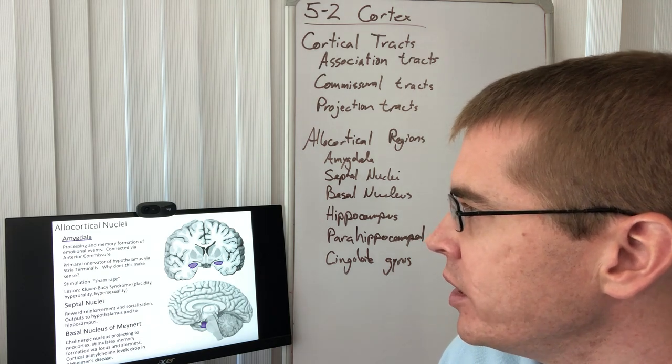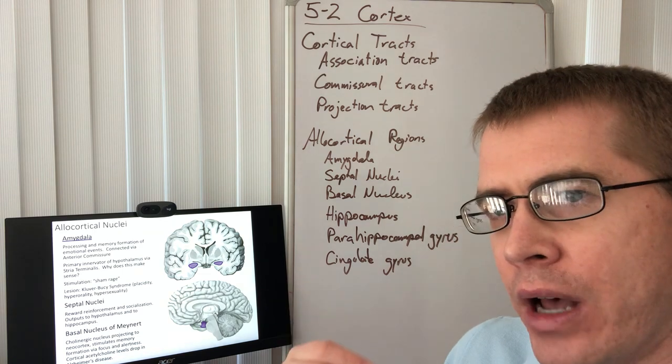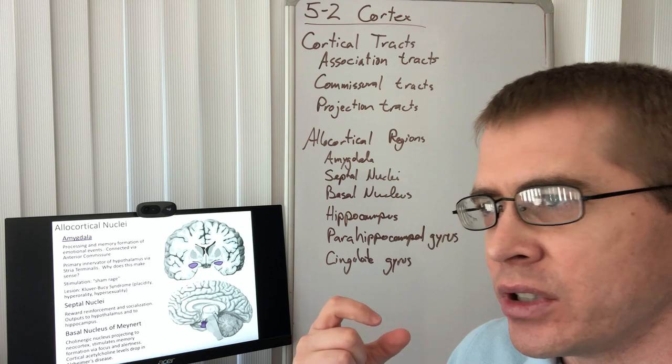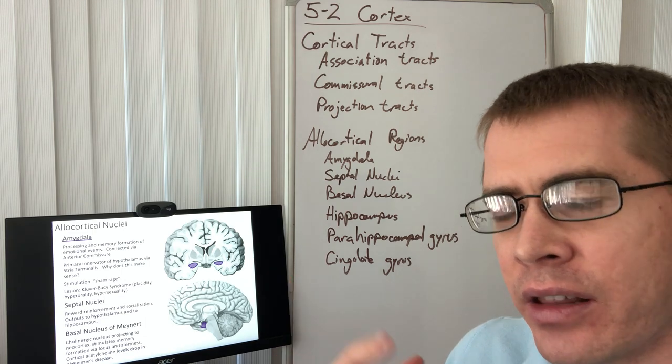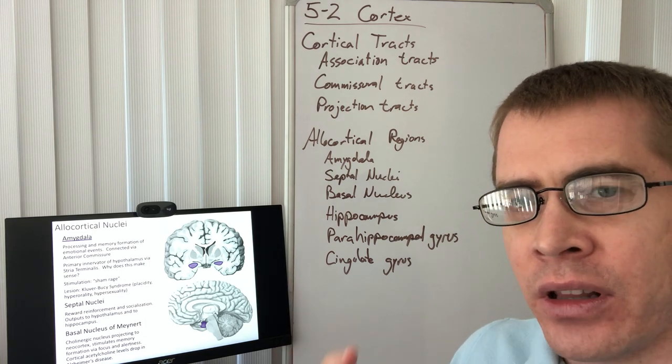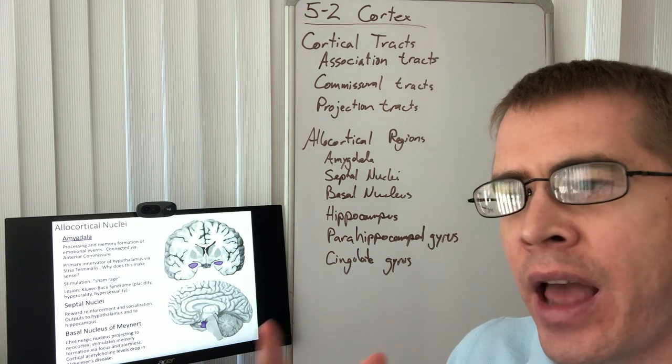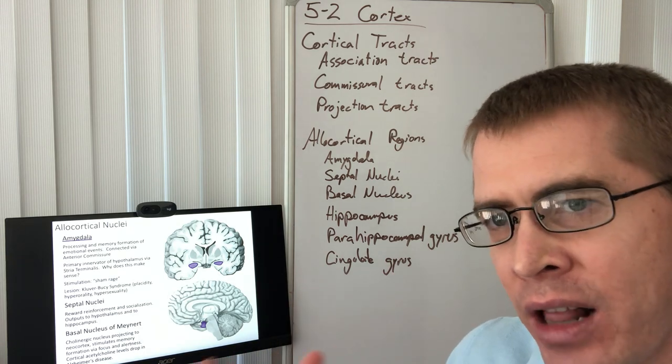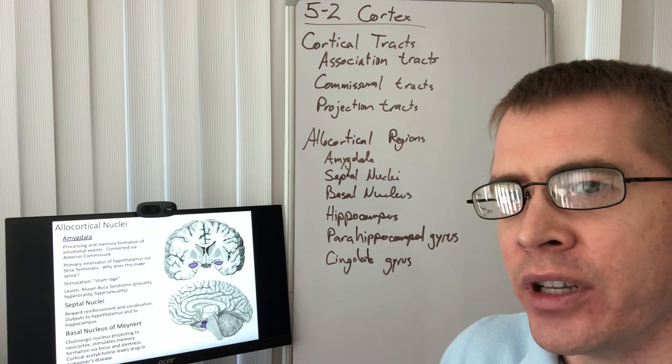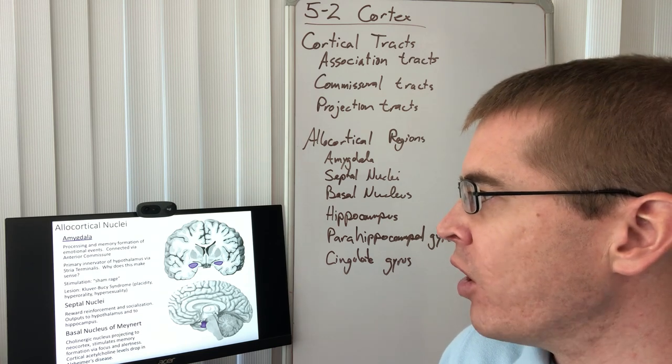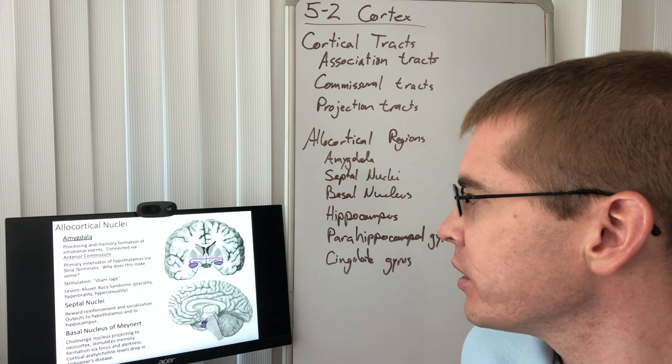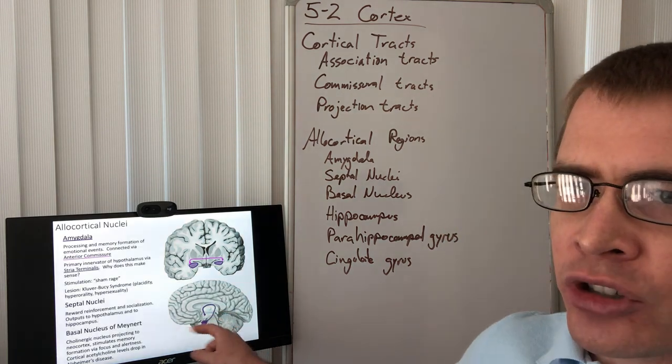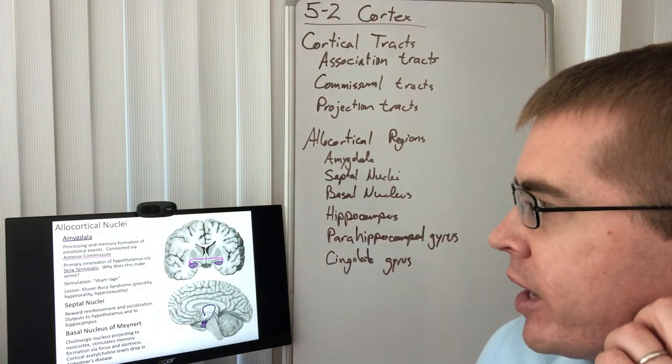Okay, so the amygdalae, you think about it, you have an emotional event, your heart starts racing, your pupils dilate, things happen autonomically in your body. And so the amygdalae have to be connected to the autonomic system, have to be connected to the hypothalamus. And in fact, they are via a connection called the stria terminalis.